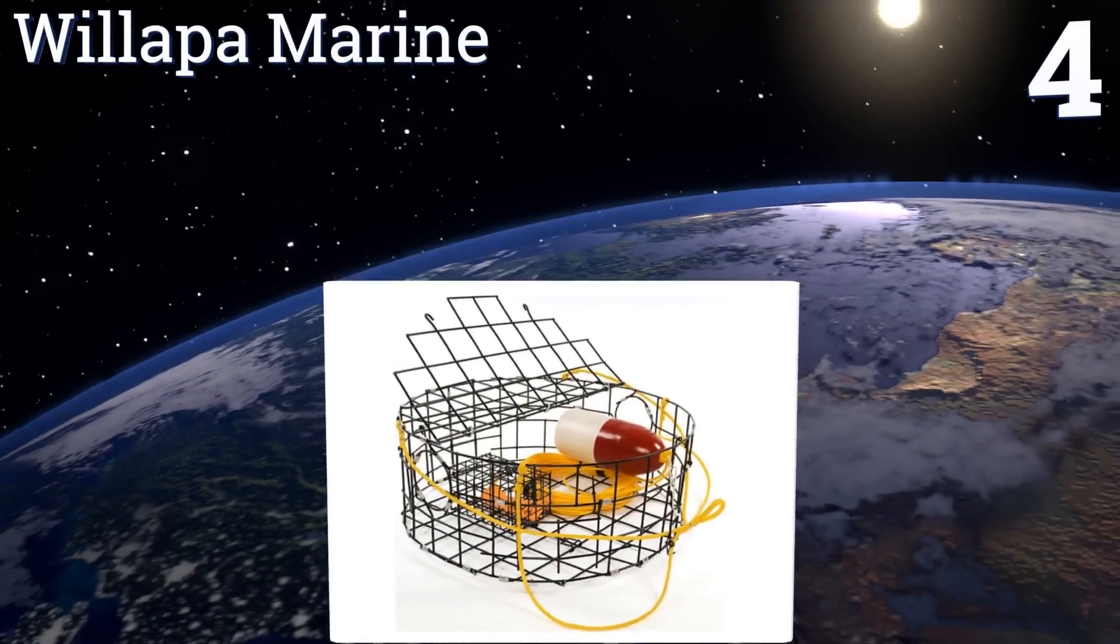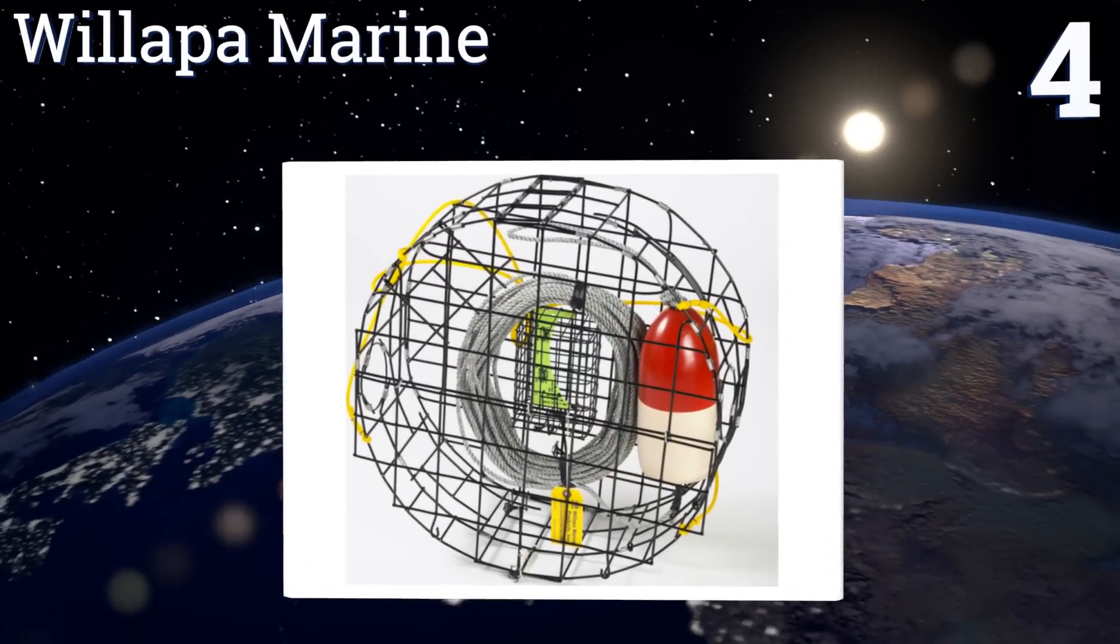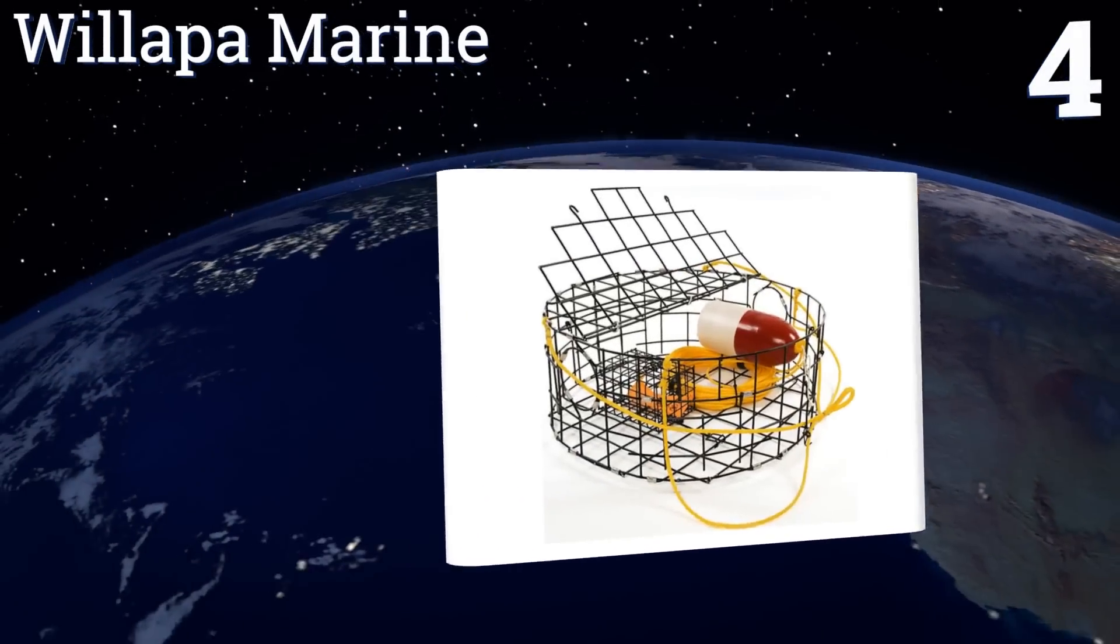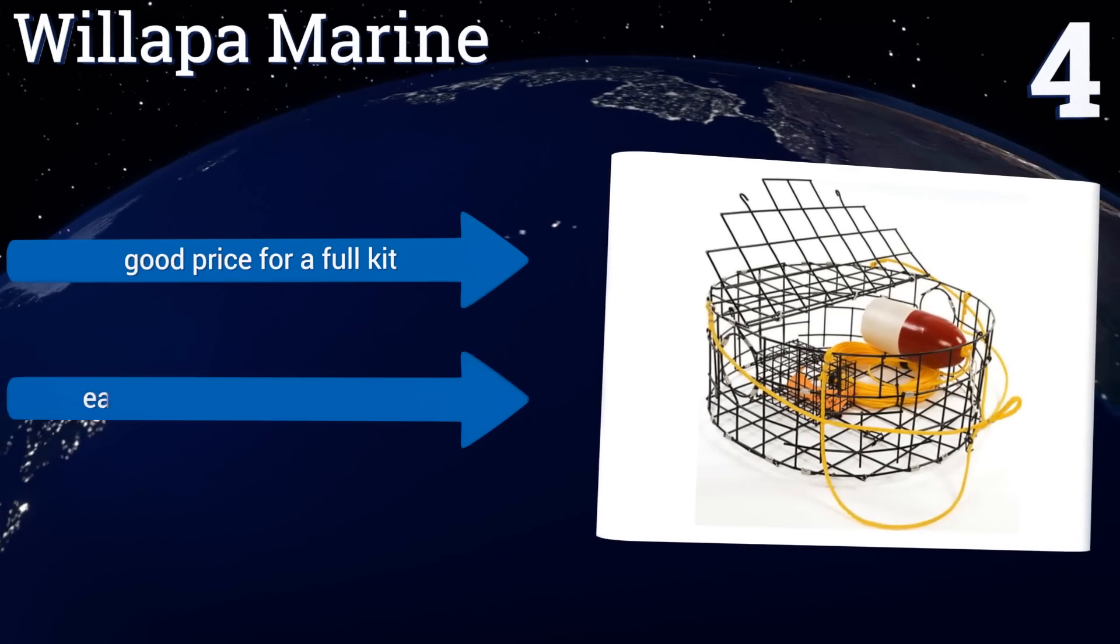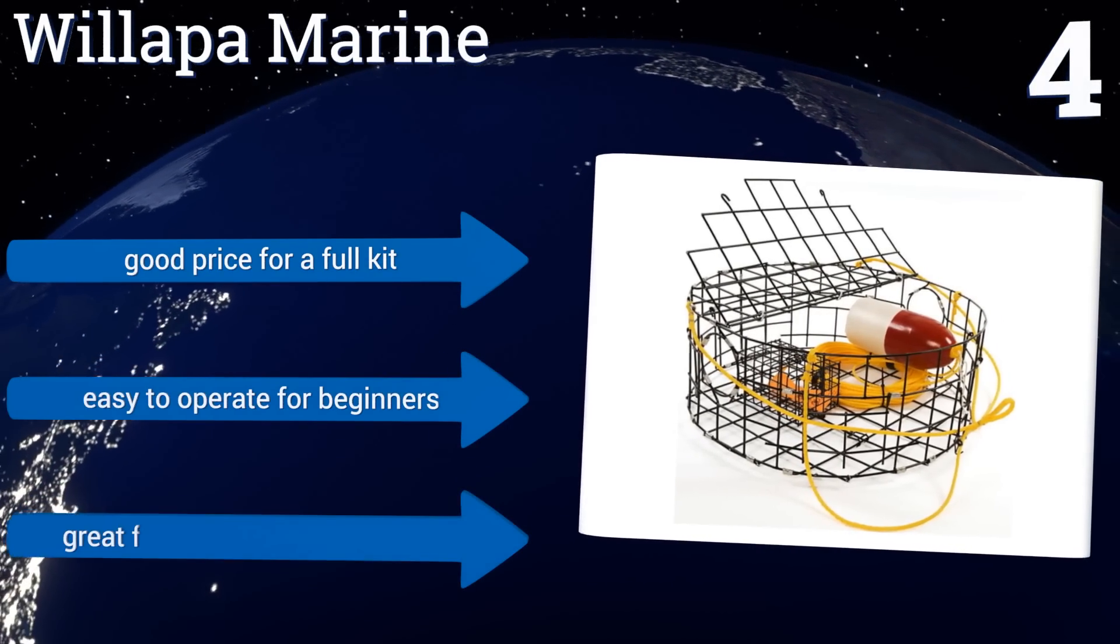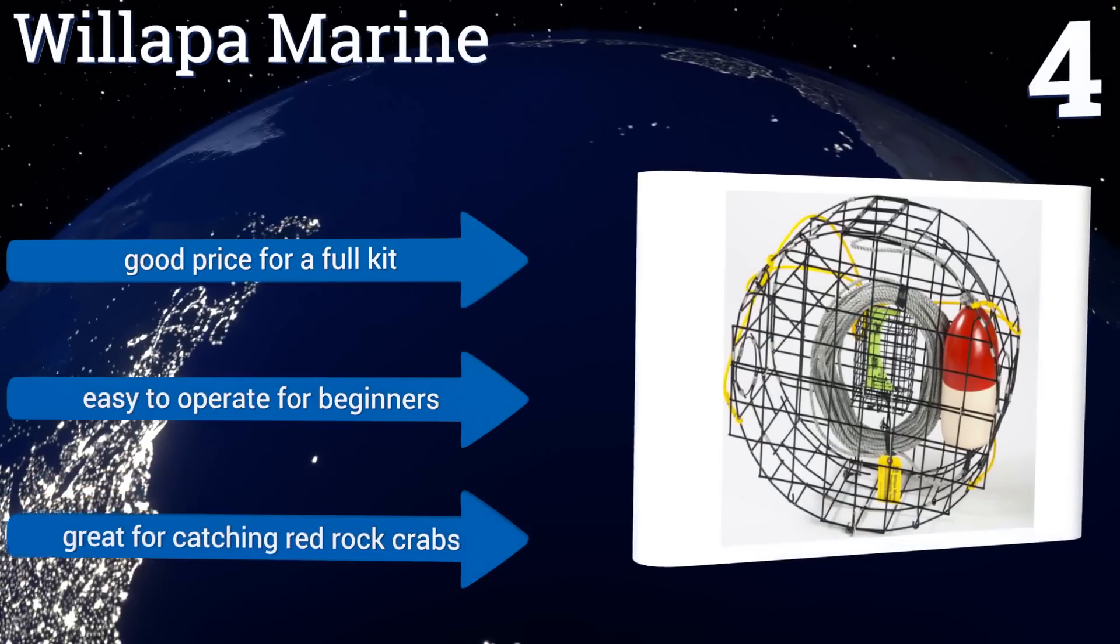At number four, this pot from Willapa Marine is a complete fishing set with a trap, 100 feet of rope, a buoy, and a line weight. At 11 pounds, you don't have to worry about it getting swept away by currents, yet they're still easy to pull up at the end of the day. It's a good price for a full kit and it's easy to operate for beginners.